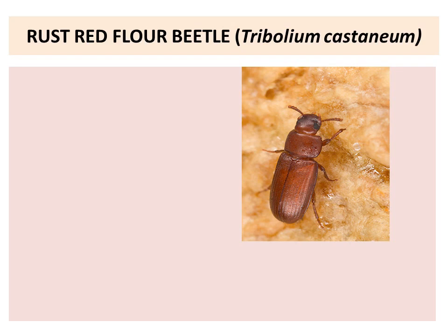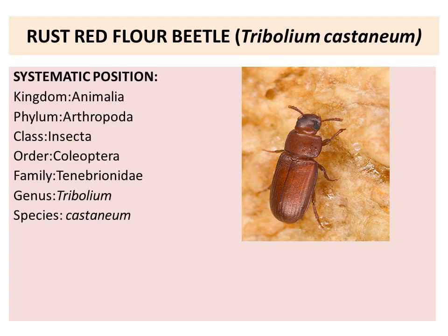Now coming to the second important pest, that is Tribolium castaneum, the Red Flour Beetle. Coming to the classification: Kingdom Animalia, Phylum Arthropoda, Class Insecta, Order Coleoptera, Family Tenebrionidae, Genus Tribolium, Species castaneum.